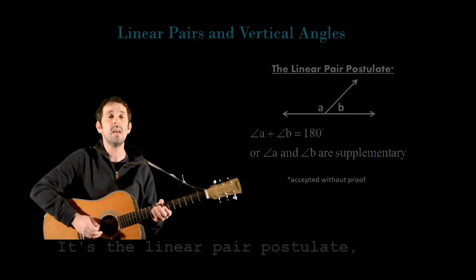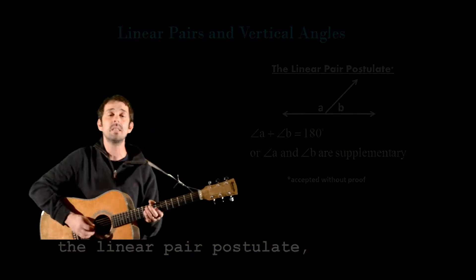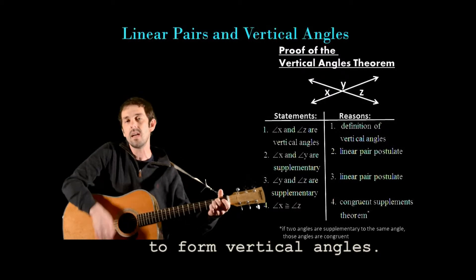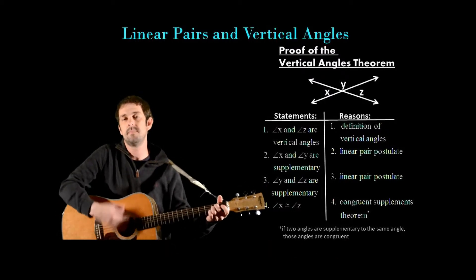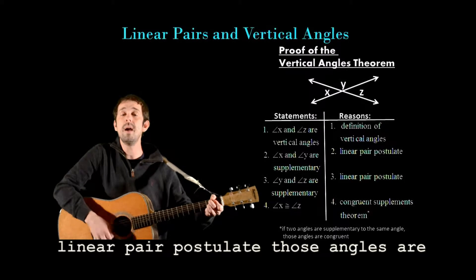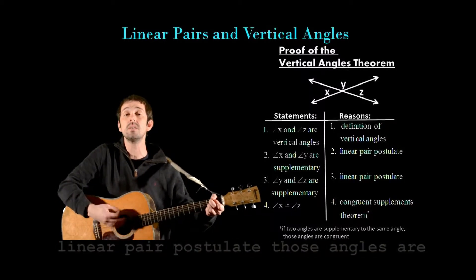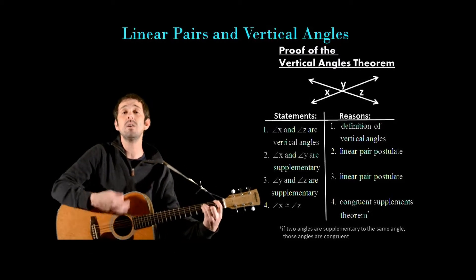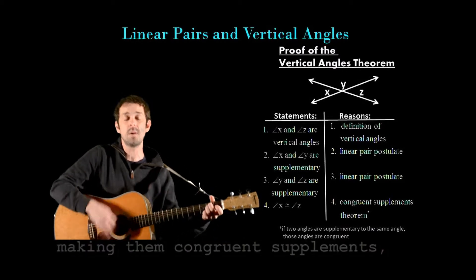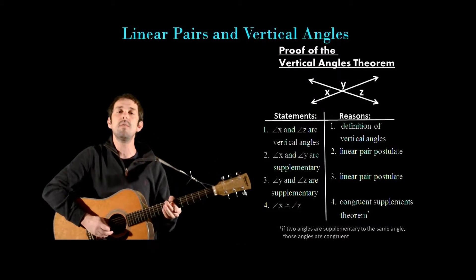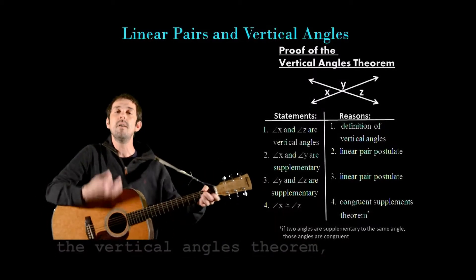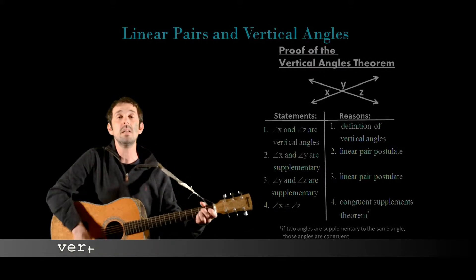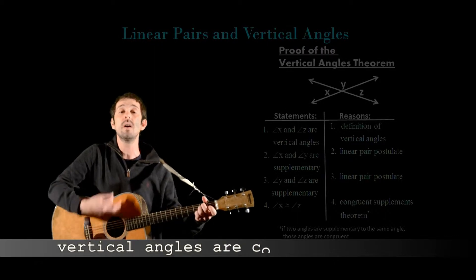It's the linear pair postulate. And if two lines cross to form vertical angles, then by the linear pair postulate, those angles are supplementary to the same angle, making them congruent supplements. It's the vertical angles theorem — vertical angles are congruent.